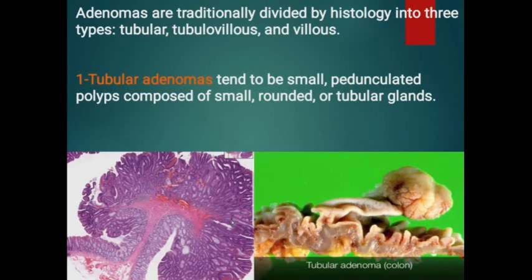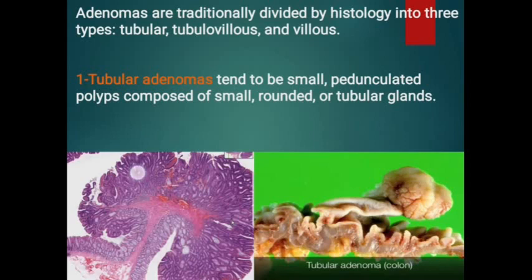Adenomas are traditionally divided by histology into three types: tubular, tubulovillous, and villous. For the first type, tubular adenoma: looking at the picture, a small pedunculated polyp protrudes above the mucosa, raised by a stalk of connective tissue. We can see proliferating epithelium with darker glands that don't have much mucin. The mucosa here is much darker than normal colonic mucosa because of the higher nuclear-to-cytoplasmic ratio in dysplastic epithelium.